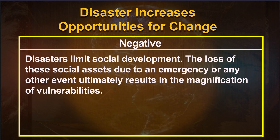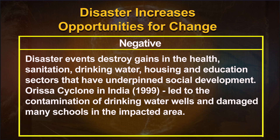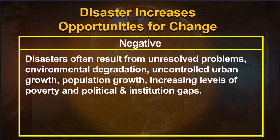Disasters limit social development. The loss of social assets ultimately magnifies vulnerabilities. Disaster events destroy gains in health, sanitation, drinking water, housing and education. For example, Odisha's cyclone in 1999 contaminated drinking water wells and damaged many schools in the impacted area. Disasters often result from unresolved problems including environmental degradation, uncontrolled urban growth, population growth, increasing levels of poverty, and political and institutional gaps.